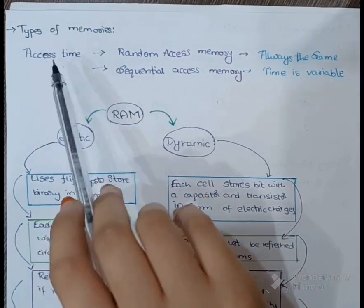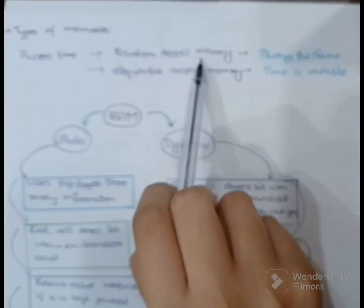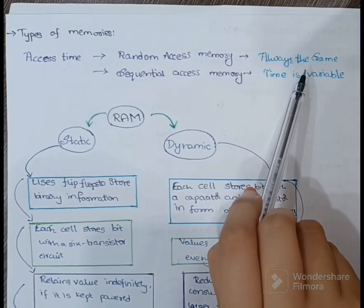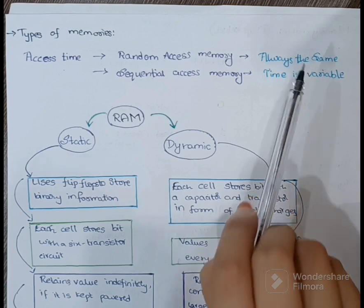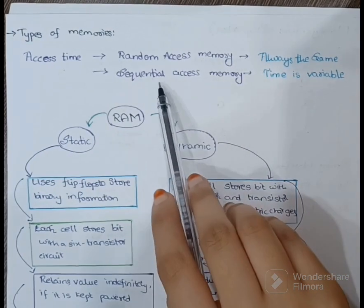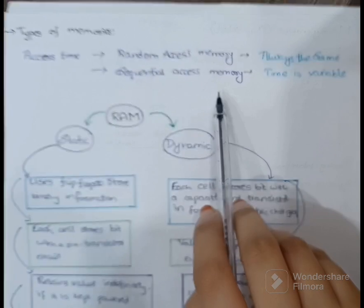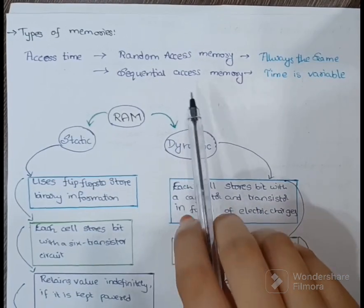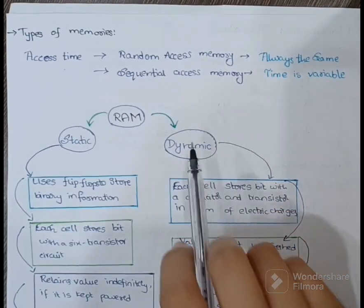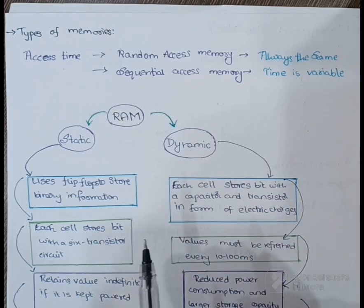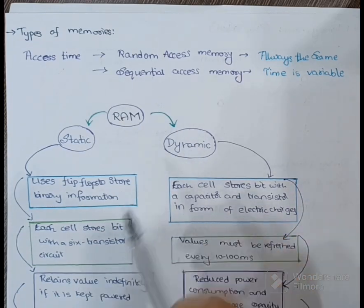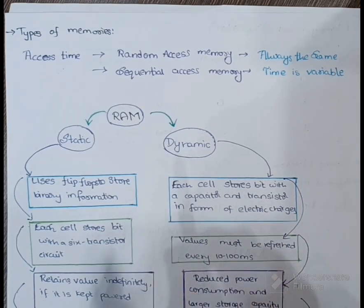In random access memory, the access time is always the same regardless of the particular location of the word. In sequential access memory, the time it takes to access a word depends on the particular position of the word with respect to the position of the read head, so the access time is variable.